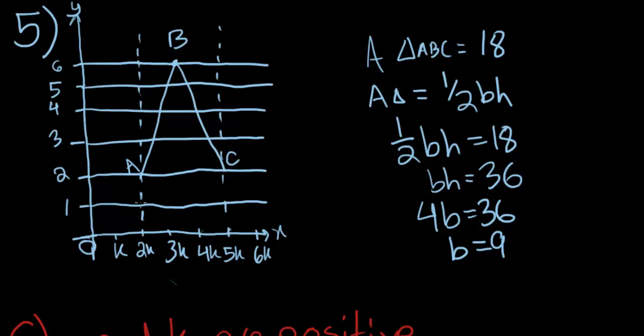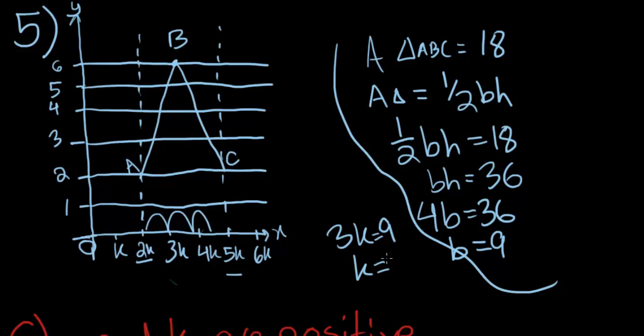As you can see, the base goes from 2K to 5K. So that's 1, 2, 3. So 3K is equal to 9. Let's separate this here. I cut through the equation, it's okay. K is equal to 3, and that is choice E, the correct answer.